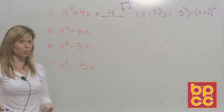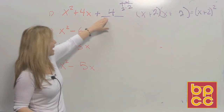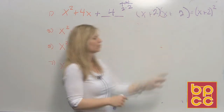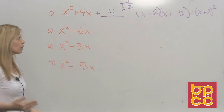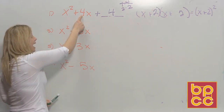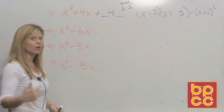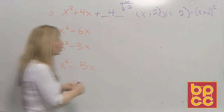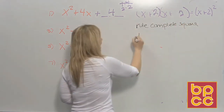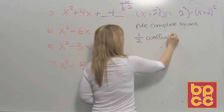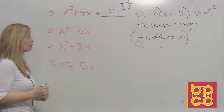When they say complete the square, all they want is the missing number — what number would you add to make it a trinomial that factors to be identical. There is a rule: to complete the square, take half of the coefficient in front of x, then square it. What's half of 4? That's 2. Then 2 squared is 4. That's why it's called completing the square.